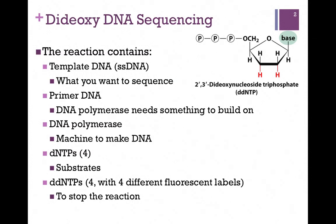Each one of these dideoxynucleotide triphosphates carries a different fluorescent label. A dideoxynucleotide is illustrated at the top of the screen here. As you can see, not only is it a 2' deoxy, it's also a 3' deoxy — hence the name dideoxy. That's why this process is referred to as dideoxy DNA sequencing.